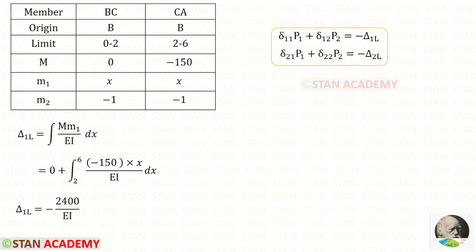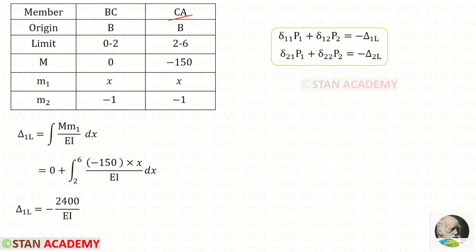Now let us find delta 1L. The formula is the integration of M times M1 divided by EI dx. For member BC, the value of M is 0, so no integration is needed and we directly enter 0. For member CA, we apply the values of M and M1 with limits 2 to 6. For delta 1L, we will get minus 2400 upon EI.